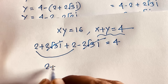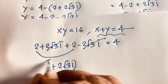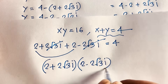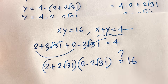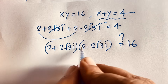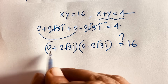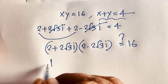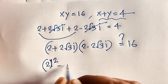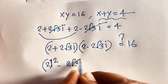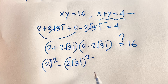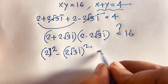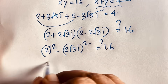Now verifying xy equals 16: (2 plus 2√3i) times (2 minus 2√3i). Using the algebraic identity (a plus b)(a minus b) equals a squared minus b squared, with a equals 2 and b equals 2√3i, we get 2 squared minus (2√3i) squared.